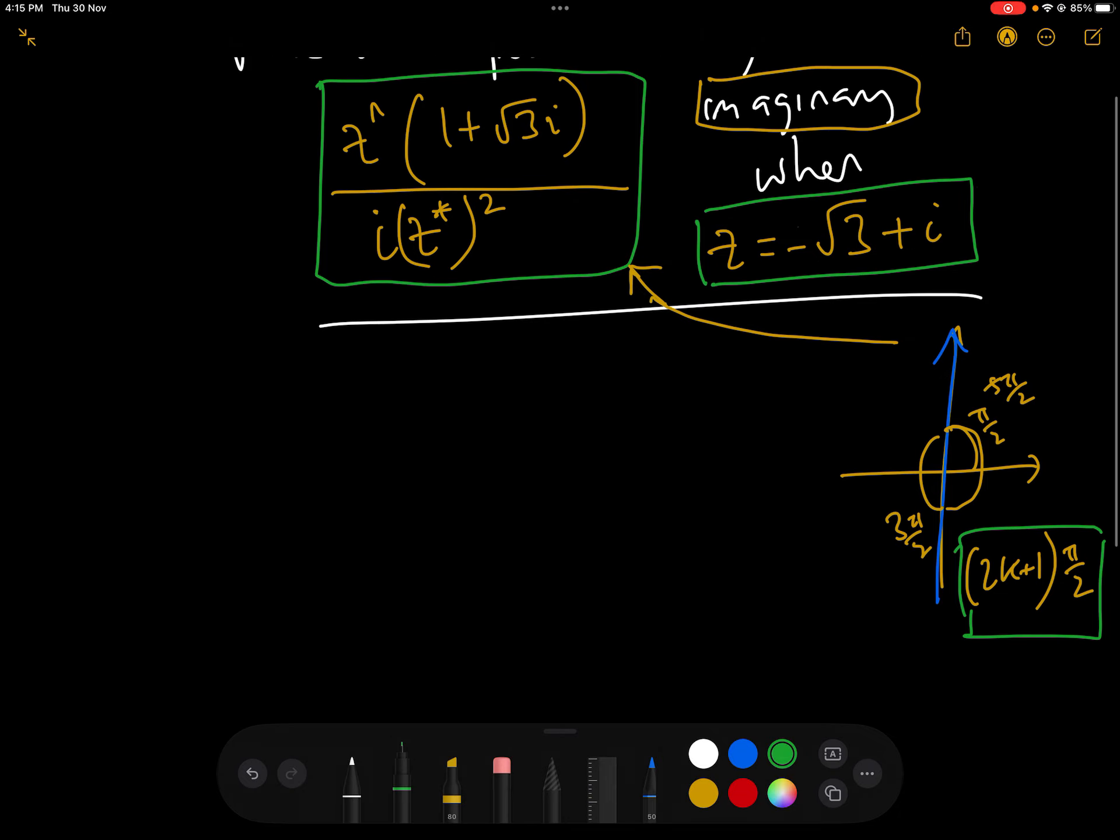What we need to do is look at the arguments of each of the constituents of this. So if z equals minus root 3 plus i, which in exponential form is 2e to the 5 pi i over 6, then z to the n in exponential form is 2 to the n e to the 5 pi n i over 6. We don't actually need the modulus, but I'll put it in.